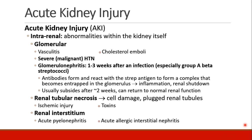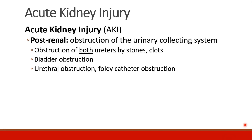Usually it subsides after a couple weeks, and patients may return to normal renal function. You can also have intrarenal abnormalities in the renal tubules, leading to necrosis, cell damage, and plugged renal tubules. This can occur due to ischemia or toxins. The renal interstitium can also be injured from acute pyelonephritis or interstitial nephritis. Finally, we have post-renal etiologies. This occurs when there's obstruction of the urinary collecting system — if the ureters are both obstructed by stones or clots, or if the bladder or urethra becomes obstructed, or a Foley catheter obstruction.